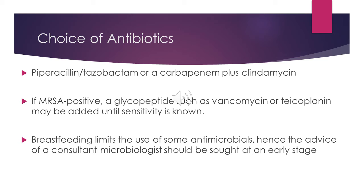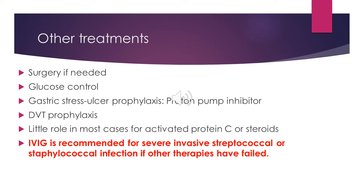Choice of antibiotics: piperacillin-tazobactam or carbapenem plus clindamycin. If MRSA-positive, glycopeptides such as vancomycin or teicoplanin may be added until sensitivity is known. Breastfeeding limits the use of some antimicrobials, so advice from a consultant microbiologist should be sought early. Other treatments depend on the focus of infection: collections or abscesses should be drained or removed; glucose control for diabetic patients; gastric stress ulcer prophylaxis with proton pump inhibitors; DVT prophylaxis. Intravenous immunoglobulin (IVIG) is recommended for severe invasive streptococcal or staphylococcal infection if other therapies have failed.